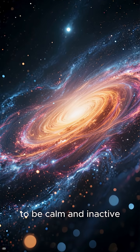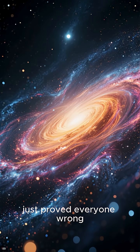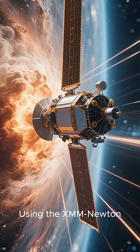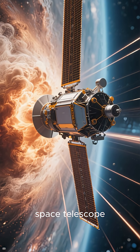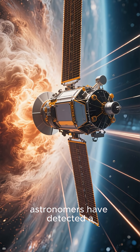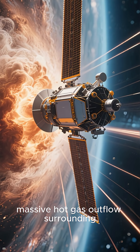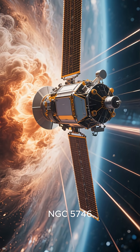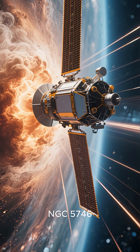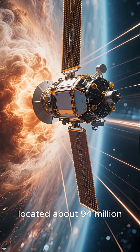A galaxy once thought to be calm and inactive just proved everyone wrong. Using the XMM-Newton Space Telescope, astronomers have detected a massive hot gas outflow surrounding the spiral galaxy NGC 5746, located about 94 million light-years from Earth.